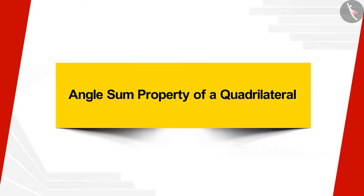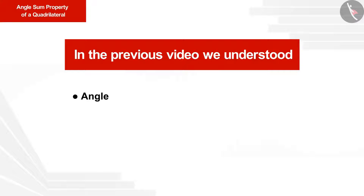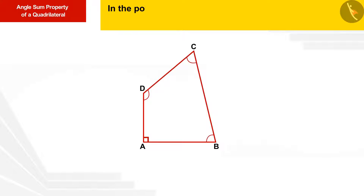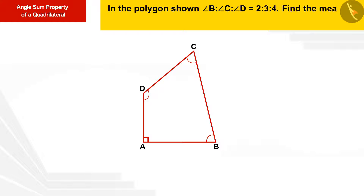Welcome to this video. In the previous video we understood the angle sum property of the quadrilateral. Today we will see an example. In the polygon shown, the ratio of angles B, C and D is 2:3:4 respectively. Find the measure of the smallest angle of the polygon.